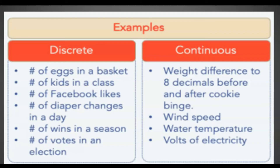For continuous random variables, we have the weight difference to 8 decimals before and after a cookie binge. You cannot count weight, but you can measure it, therefore it is a continuous random variable. Next is wind speed — you cannot count the speed of the wind, but you can measure it, so it is continuous. Water temperature — you cannot count it, but you can measure the hotness or coldness of the water temperature. And lastly, volts of electricity — you cannot count it, but you can measure it. Therefore, these variables are considered continuous.